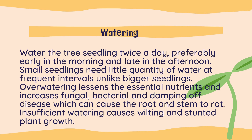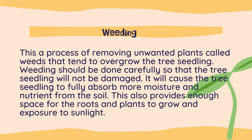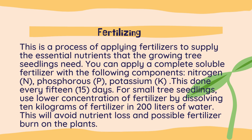Insufficient watering causes wilting and stunted plant growth. Number two is weeding. This is the process of removing unwanted plants called weeds that tend to overgrow the tree seedlings. Weeding should be done carefully so that the tree seedling will not be damaged. It allows the tree seedling to fully absorb more moisture and nutrients from the soil, and provides enough space for roots and plants to grow, as well as exposure to sunlight.